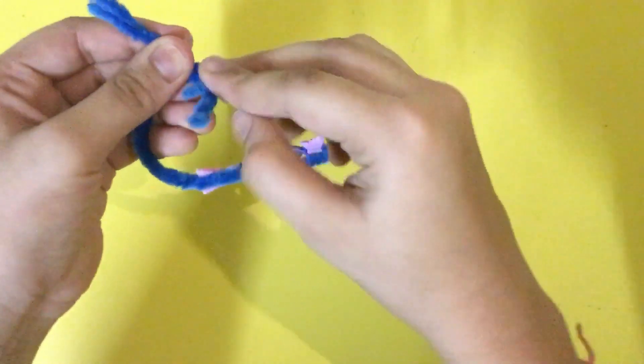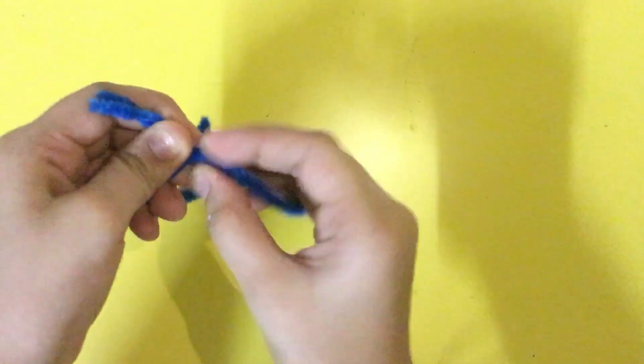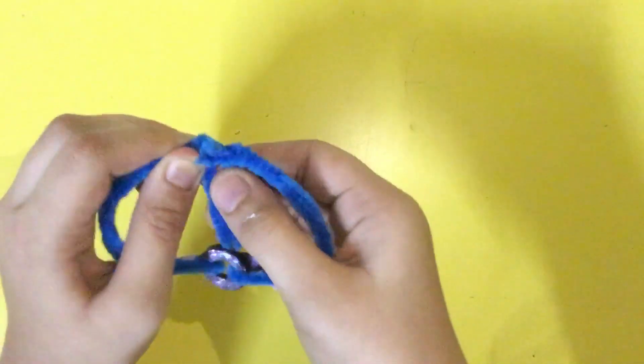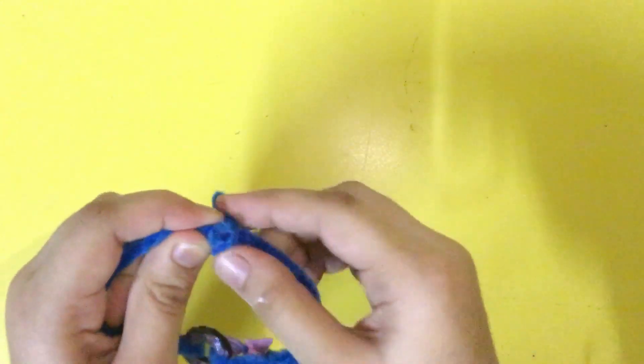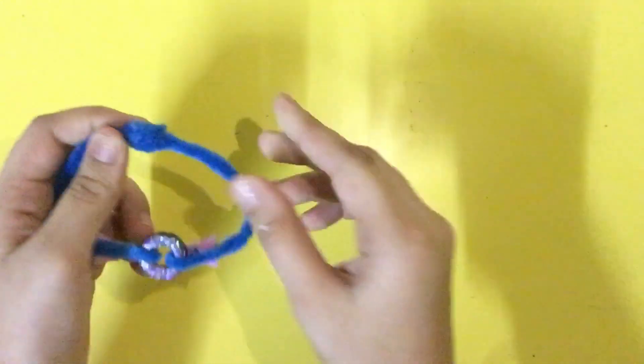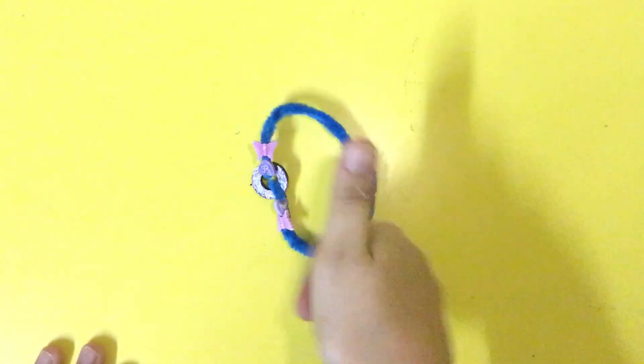We are going to twist everything like that and do a mounting like we did in the last bracelet. So this portion will go at the back and after this we are done and we are ready to wear it.